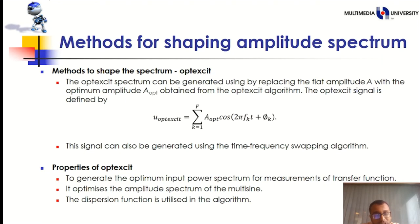Method to shape the spectrum Optexcit. The Optexcit spectrum can be generated by replacing the flat amplitude A with the optimum amplitude A optimum obtained from the Optexcit algorithm. The Optexcit signal is defined by the equation. This signal also can be generated using the time frequency swapping algorithm. Properties of Optexcit. To generate the optimal input power spectrum for measurement of transfer function. It optimizes the amplitude spectrum of the multisine. The dispersion function is utilized in this algorithm.